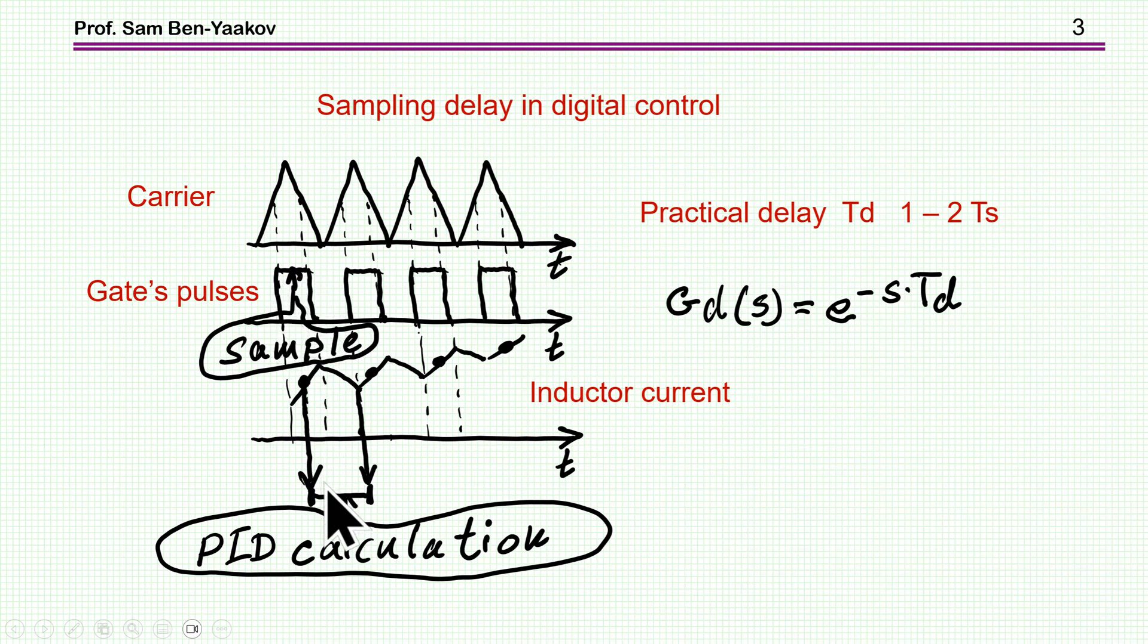And then if it is a digital system, we have to do a calculation of the PID controller. It takes time. So it won't be before the next cycle that actually the result of this measurement is being implemented. So we have a delay. And this delay, depending on the system, processor that you use, and the duty cycle, etc.